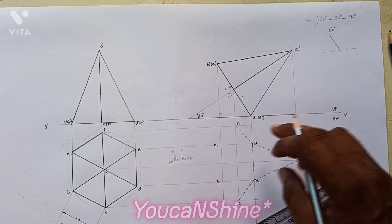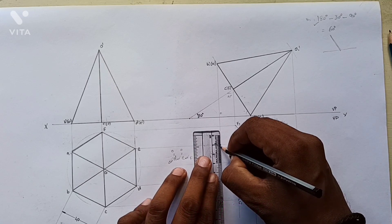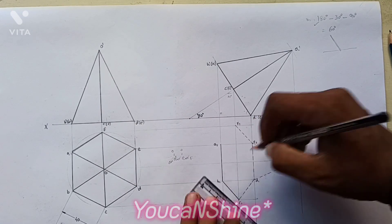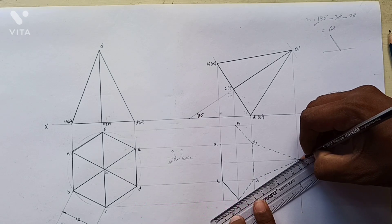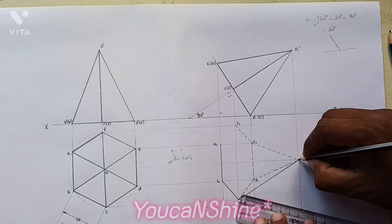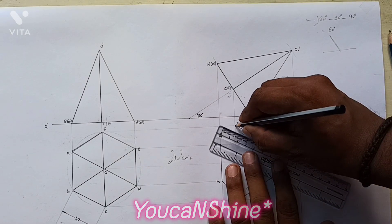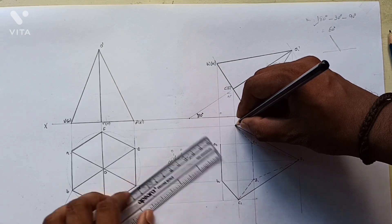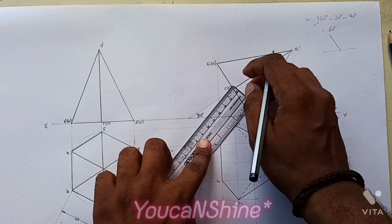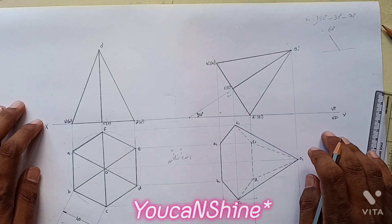The outer boundary is dark. The outer boundary is A, B, C, O, F, E. The outer boundary is dark. If you see the real connections, you can see them.